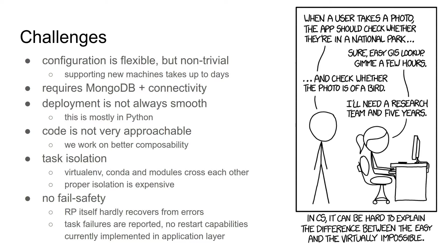A feature we are missing badly is fail safety. RP itself hardly recovers from errors, which is a problem and also emphasizes the need for fine tuning and stable configuration. We also don't handle task failures very well. This can be compensated at the application layer to some extent — when we report tasks as failed, the application is free to resubmit or reconfigure and resubmit — but the price is efficiency and latency. We are working on mechanisms to both detect task failures and node failures more reliably on the execution layer, and to provide basic recovery mechanisms on the execution layer in the near future.